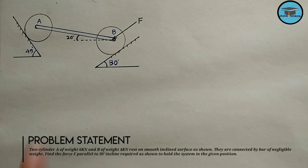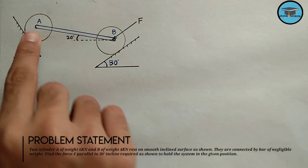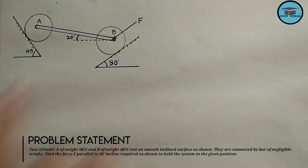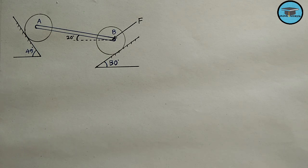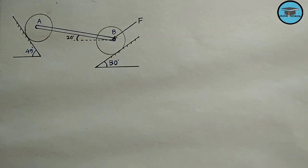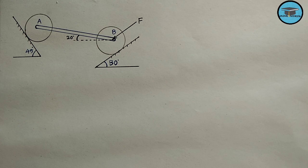The problem consists of two cylinders A and B which are connected by means of a rod having negligible weight, which is inclined at an angle of 20 degrees with the horizontal. We need to determine the value of force F, which is parallel to this inclined plane, to maintain the system in this position. The weight of cylinder A is 6 kN and the weight of cylinder B is 4 kN.